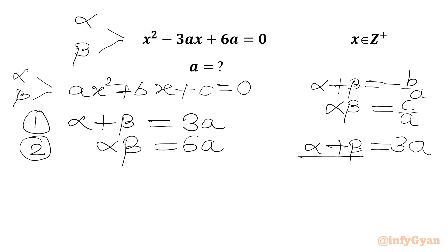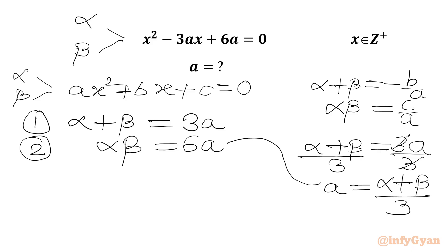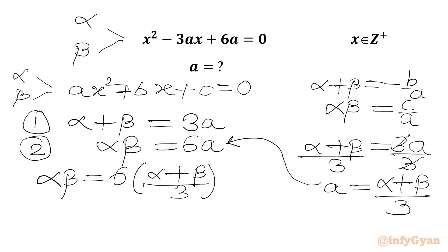From our first equation, alpha + beta = 3a. Dividing both sides by 3, we get a = (alpha + beta)/3, which we plug into equation 2. So alpha·beta = 6 × (alpha + beta)/3. Since 6/3 = 2, we get alpha·beta = 2(alpha + beta).